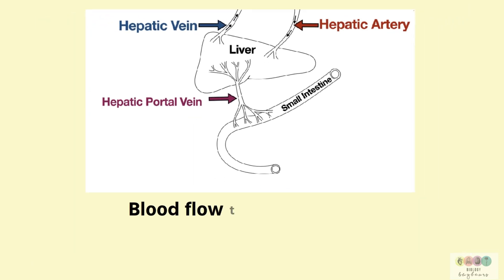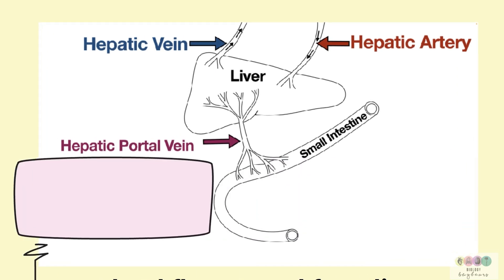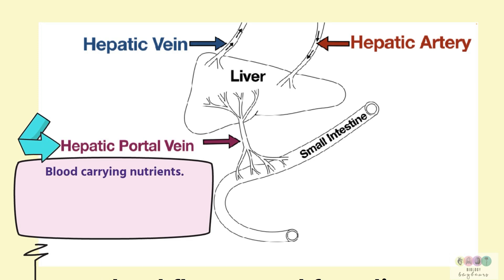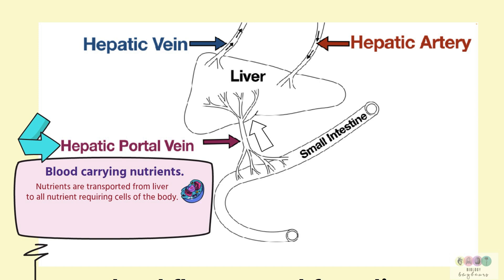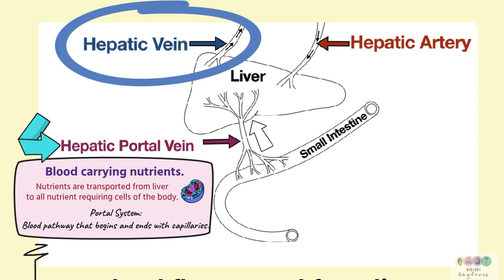The blood flow into and out of the liver is very important, and this is one diagram you should practice drawing. Starting with the hepatic portal vein: it leads from the small intestine towards the liver, carrying all the nutrients that have been absorbed into the blood. Always draw arrows on your diagram. All nutrients are sent from the liver to cells throughout the body. The hepatic portal vein is a portal system — a blood pathway that begins and ends with capillaries. Note the hepatic artery leading directly into the liver and the hepatic vein leading out.